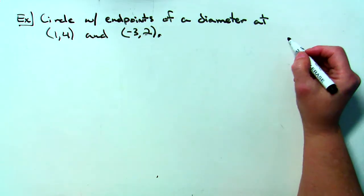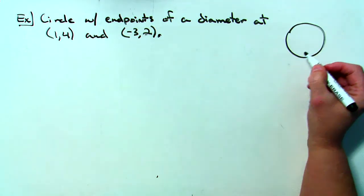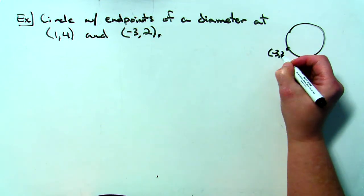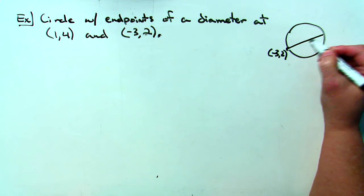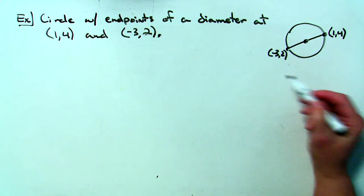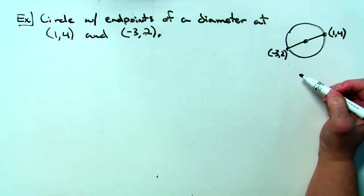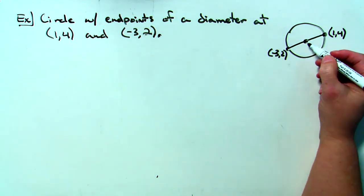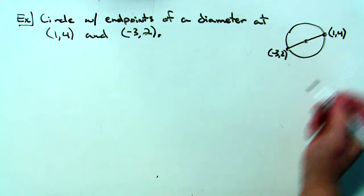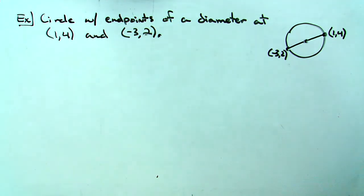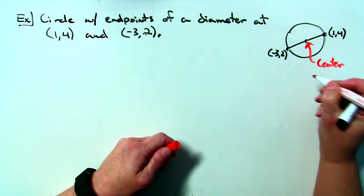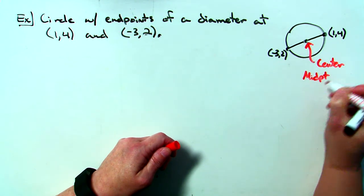Let's draw a little diagram. Say that my point negative 3, 2 is over here. Going through the center, then this point would be 1, 4. Those are the endpoints of the diameter. It would be easy to use the midpoint formula to find the coordinates of the center, and that's going to help me put it in standard form. So I want to find the center, and to do that, I'm going to use the midpoint formula, which should be reviewed from your Algebra 1 classes.